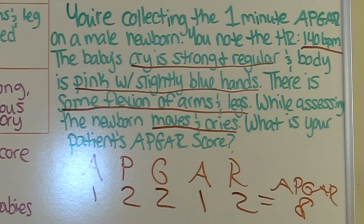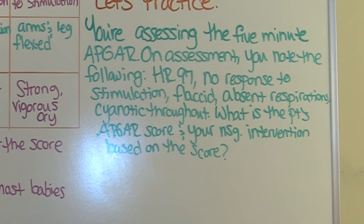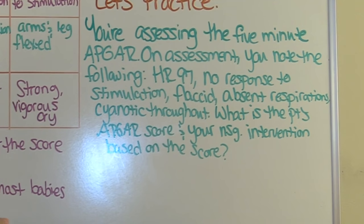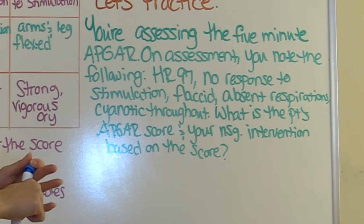Now let's look at our next practice question. You're assessing the five-minute APGAR. On assessment, you note the following: heart rate 97, no response to stimulation, flaccid, absent respirations, and cyanotic throughout. What is the patient's APGAR score, and what is your nursing intervention based on the score?